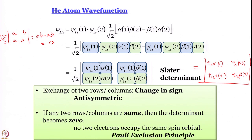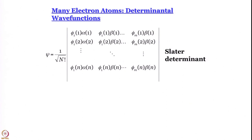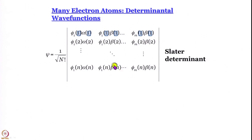Using the concept of Slater determinants, we arrive at the Pauli exclusion principle very beautifully. But so far we have only worked with helium - a two-electron system. What happens if we want to include more electrons? For many-electron atoms, you can write a similar determinant wave function - you can write the wave functions as a Slater determinant. I have shown you one for an N-electron atom. Look at the first row: the electron label is kept the same as usual and spin orbitals change from phi_1_alpha, phi_1_beta, then phi_2_alpha, phi_2_beta, and so on.